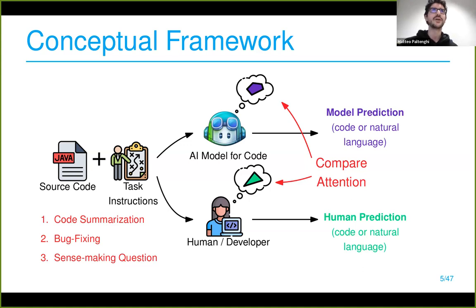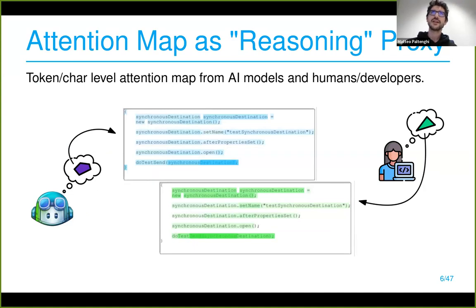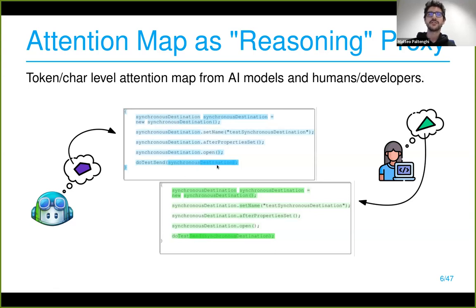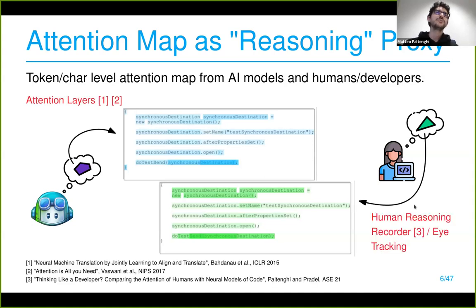We do this across three tasks: code summarization, bug fixing, and sense-making questions. For attention, we rely on attention maps — token or character-level heat maps where each token receives a weight determining its color. The higher the weight, the more attention was given to that part of the code. We collect this data in two different ways: from the model's attention layers — a fundamental innovation in transformers — and from the developer.